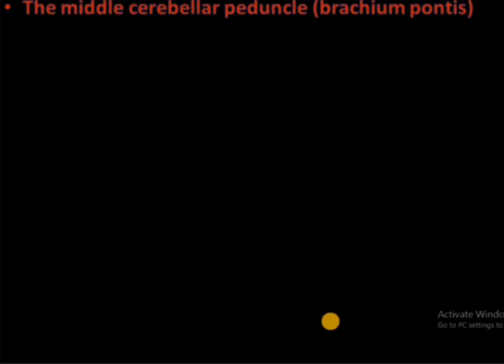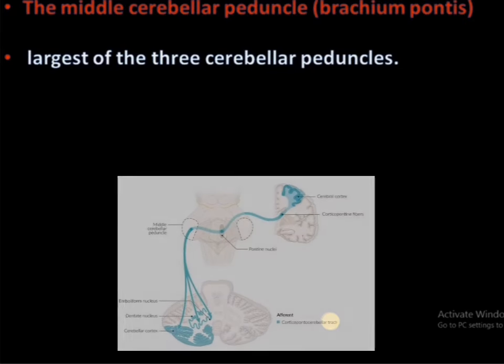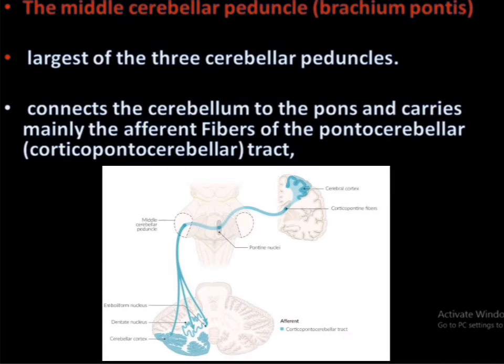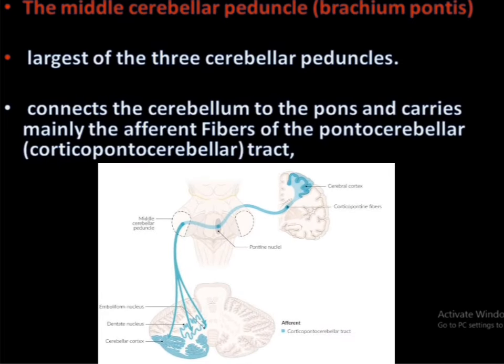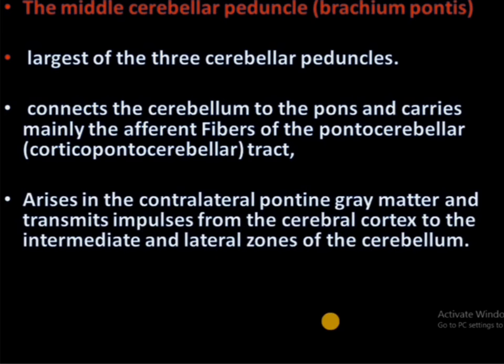The middle cerebellar peduncle (brachium pontis) is the largest of the three cerebellar peduncles. It connects the cerebellum to the pons and carries mainly afferent fibers of the pontocerebellar tracts — also called corticopontocerebellar tracts — which arise in contralateral pontine gray matter and transmit impulses from the cerebral cortex to the intermediate and lateral zones of the cerebellum.